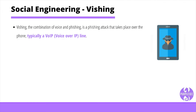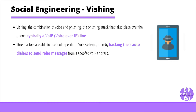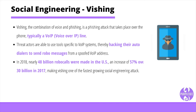Vishing, the combination of voice and phishing, is a phishing attack that takes place over the phone, typically on a VoIP line. Threat actors are able to use tools specific to VoIP systems, hacking their auto-dialers to send robo-messages from a spoof VoIP address. In 2018, nearly 48 billion robocalls were made in the US, an increase of 57% over 30 billion in 2017, making vishing one of the fastest-growing social engineering attacks.